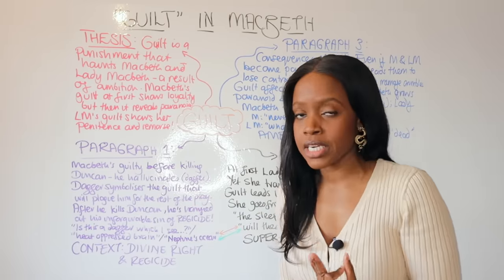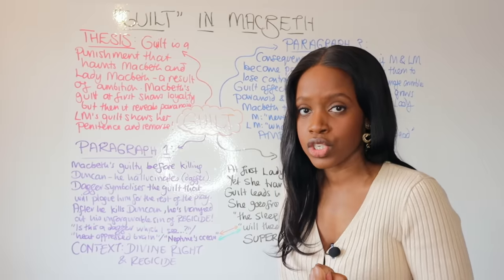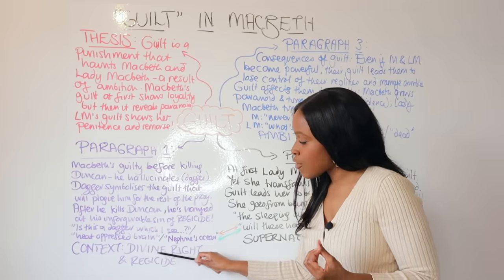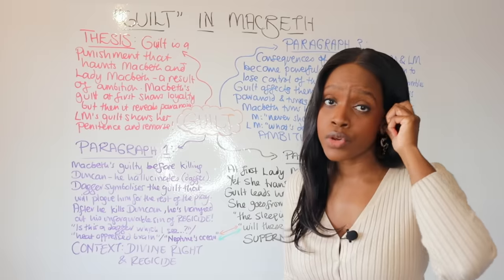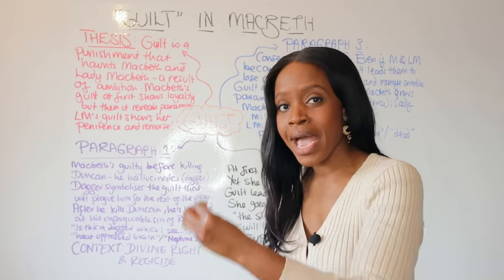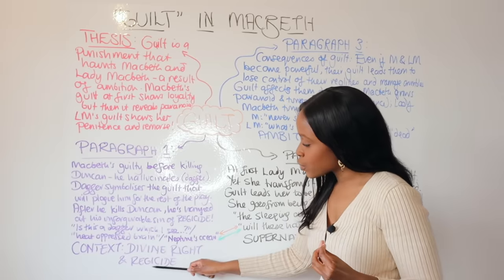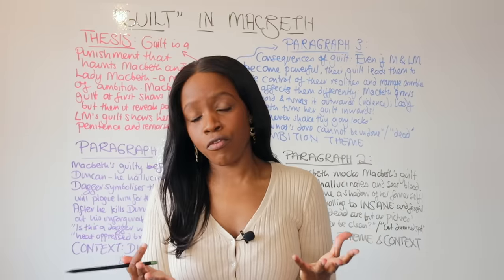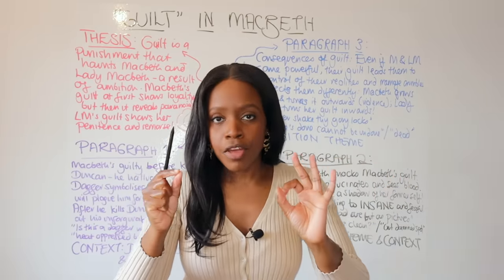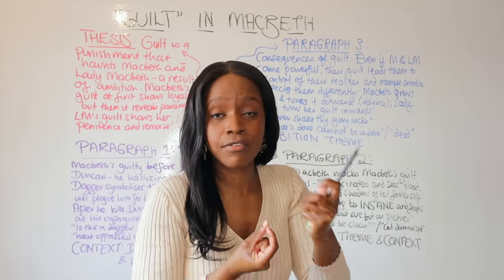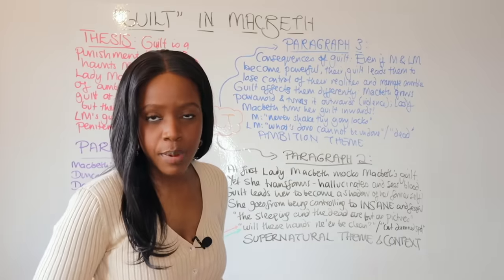For your context point, Macbeth's initial guilt shown through the supernatural dagger illustrates his reverence for the divine right of kings — he knows he is about to kill God's representative and that God will punish him. Remember that this play was first performed in front of King James I's court, so Shakespeare was showing noblemen that if they considered killing the king they would be plagued by the same guilt as Macbeth.